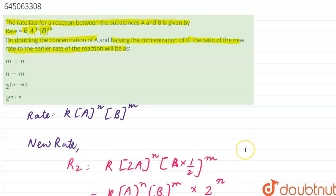So if we see the options, the answer is 2 raised to power N minus M, which is option number C.